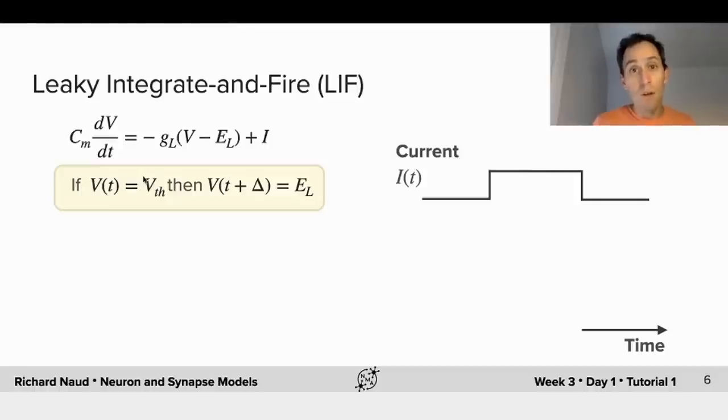And it corresponds to the time it takes for an action potential to be generated, roughly one or two milliseconds. And we then reset the membrane potential to, say, the equilibrium potential. It could be something else, but equilibrium potential is easy. And then we follow the same first-order differential equation.